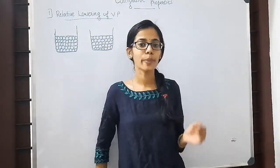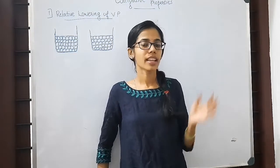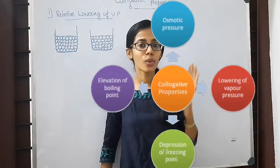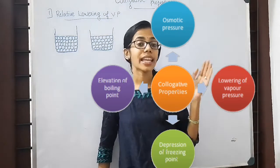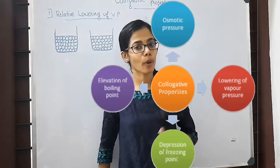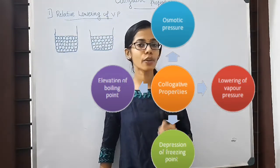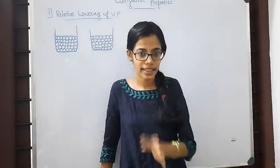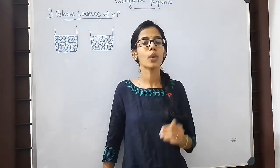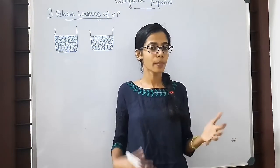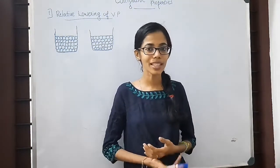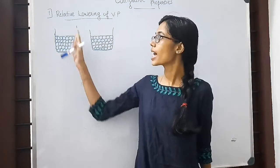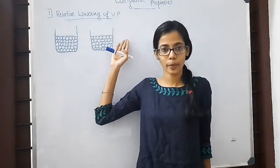Some of the colligative properties that we are going to learn are: the relative lowering of vapor pressure, elevation of boiling point, depression of freezing point, and finally the osmotic pressure. In this video, we are going to learn about some basics of colligative properties and its first property — the relative lowering of vapor pressure.